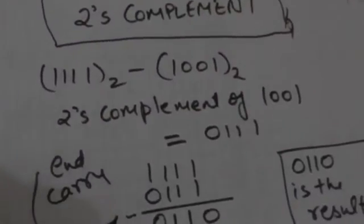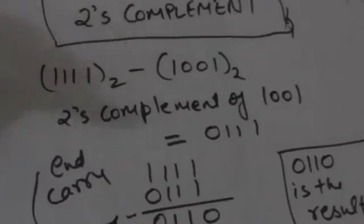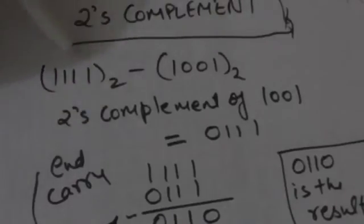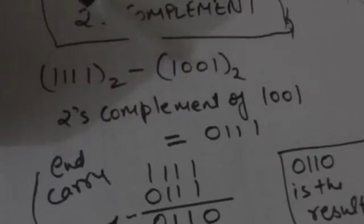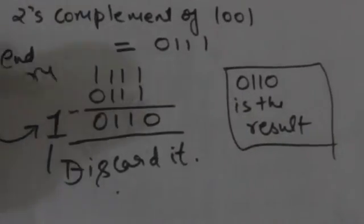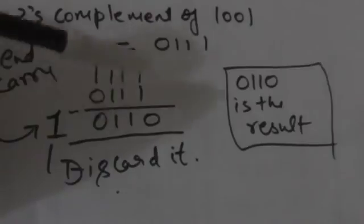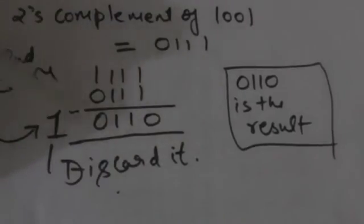Now suppose there are two binary numbers and we have to find their difference. Here the base is 2. Suppose we have to subtract 1001 from 1111. First we will find the 2's complement of 1001, which is 0111. Now we will add this to the first number, 1111. When we add these two numbers we get 1 0 1 1 1 0. Here the leading 1 is the end carry.